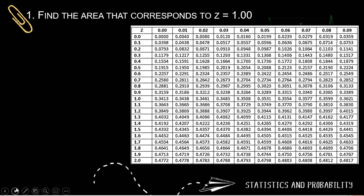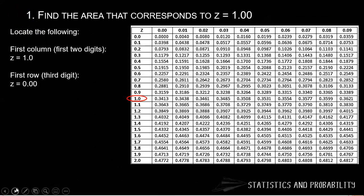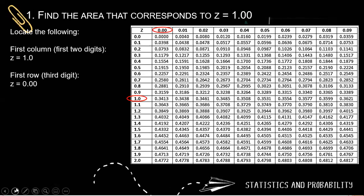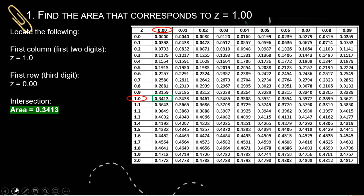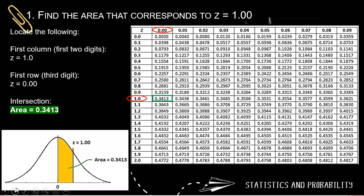Find the area that corresponds to Z equals 1. So first, we locate the first column that is Z is equal to 1.0. That one. Next, on the first row, we have third digit 0.00. And then find the intersection. The intersection is 0.3413. So how do we illustrate that one? So it is exactly here. The shaded area is to the right of the mean.